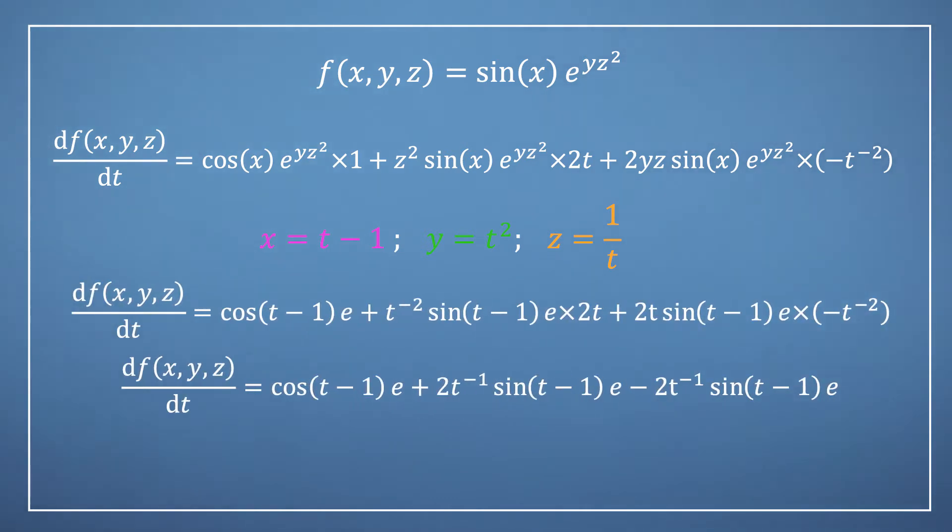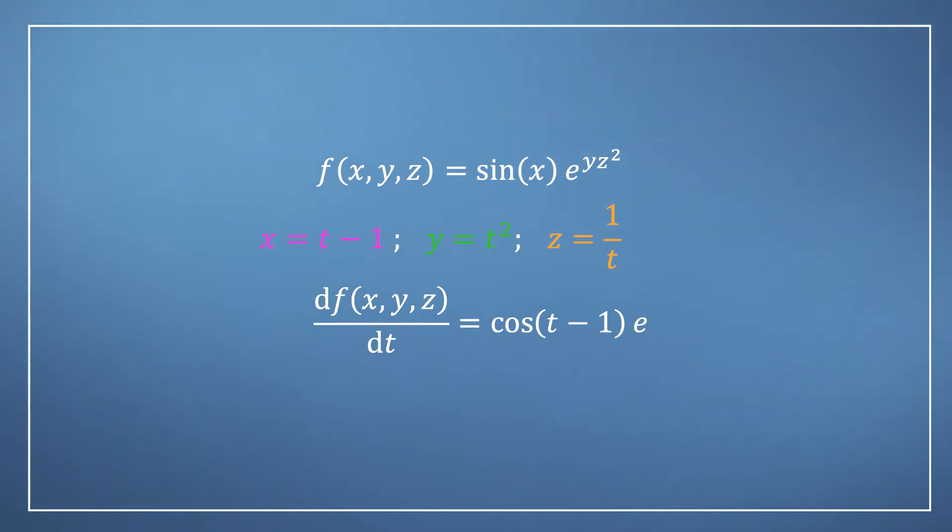we can see that the second and third terms are the same, just with opposite signs, and so they will cancel each other out. Then, kind of amazingly, we arrive at the same result as we saw at the beginning of the lecture.